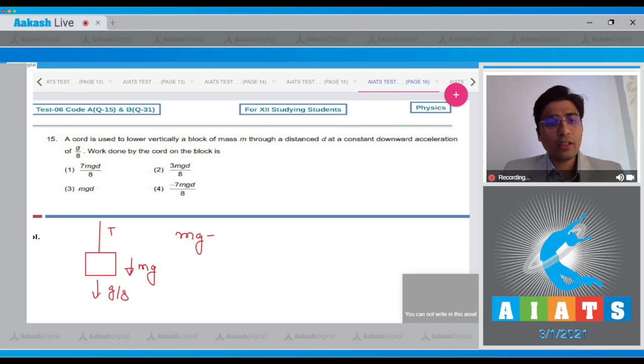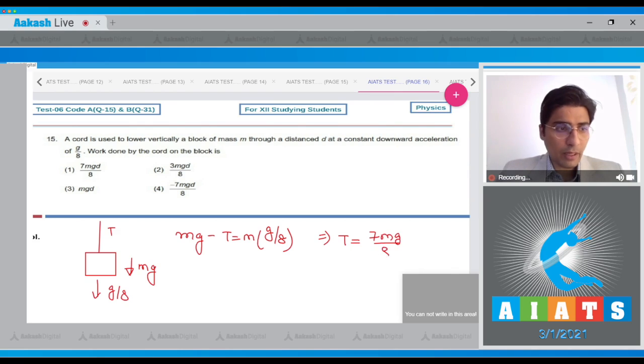From the second law of motion, we can write down that mg minus t will be equal to m into its acceleration, that is g by 8. Meaning that t will be equal to 7 mg by 8.